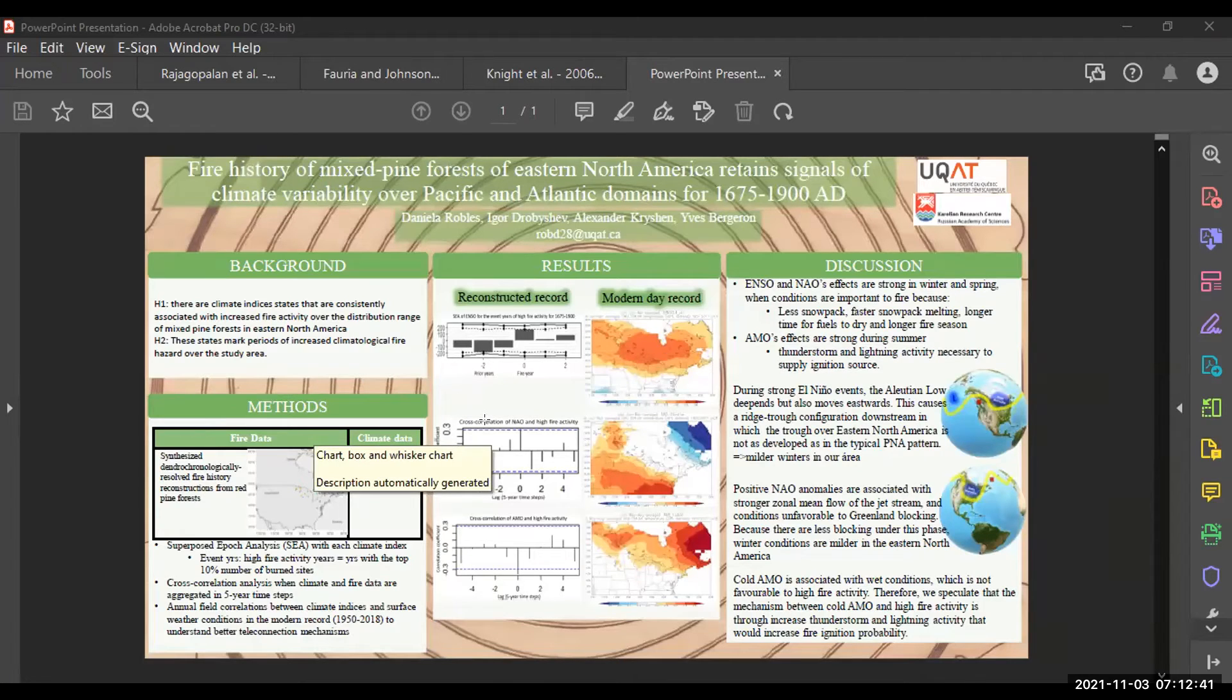And for the cross correlation analysis, when the data is aggregated, NAO yielded significant patterns. And for NAO, it was a positive association. So positive NAO anomalies are the fire prone state of NAO. And when I conducted a field correlation analysis in the modern day record, positive NAO is also associated with higher temperatures in the winter and the spring months preceding the fire season.